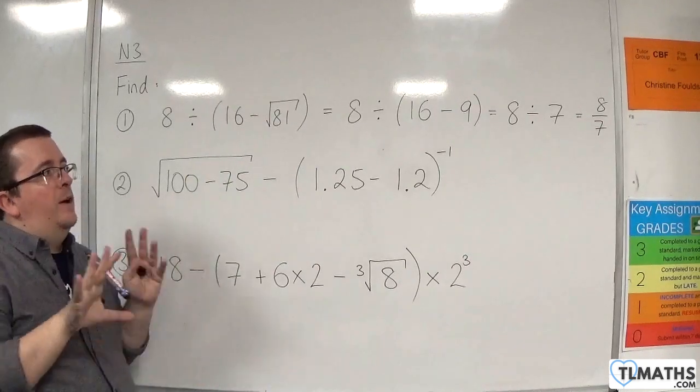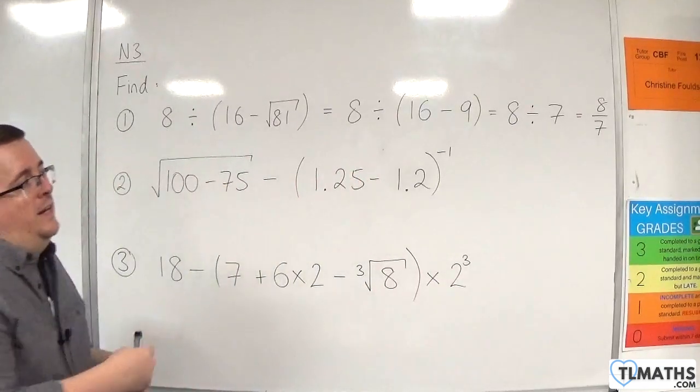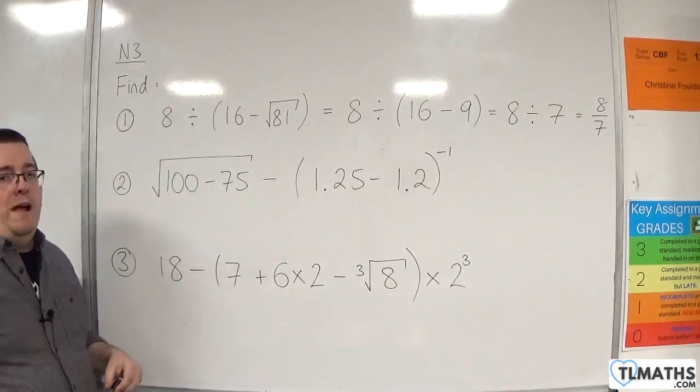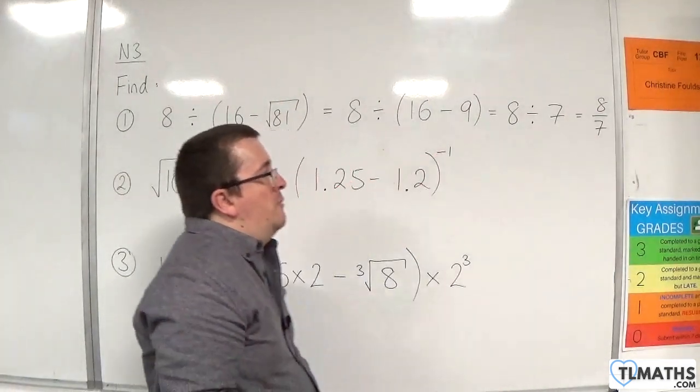Now, you could say, I'm going to go into decimals, so I'm going to do 8 divided by 7 and work it out in decimals. But it just keeps on going, so you'd have to round it at some point. I'm just going to keep it in exact form as that fraction.